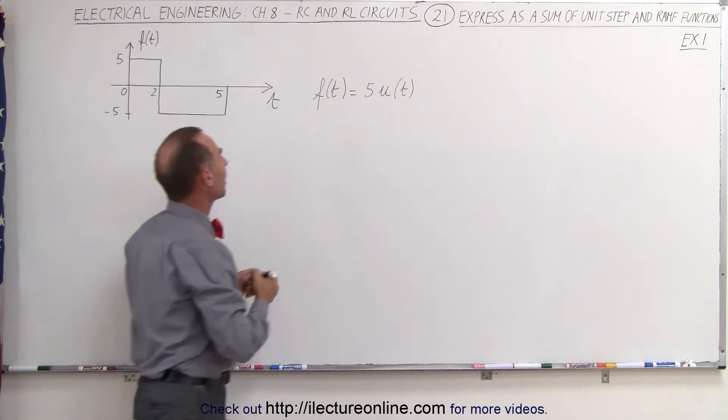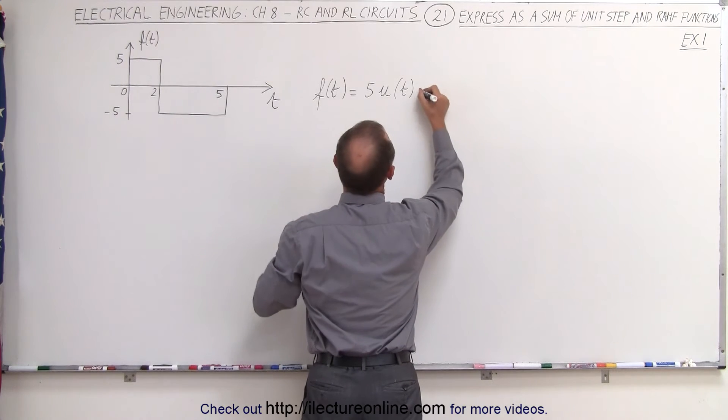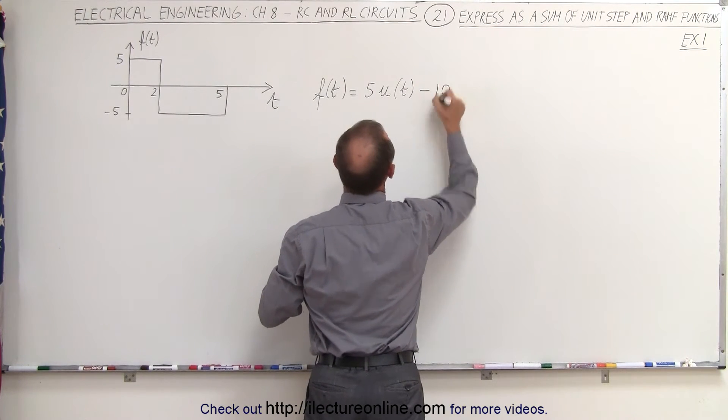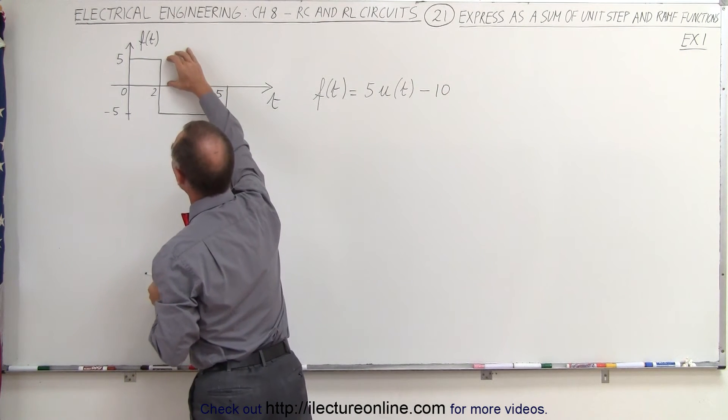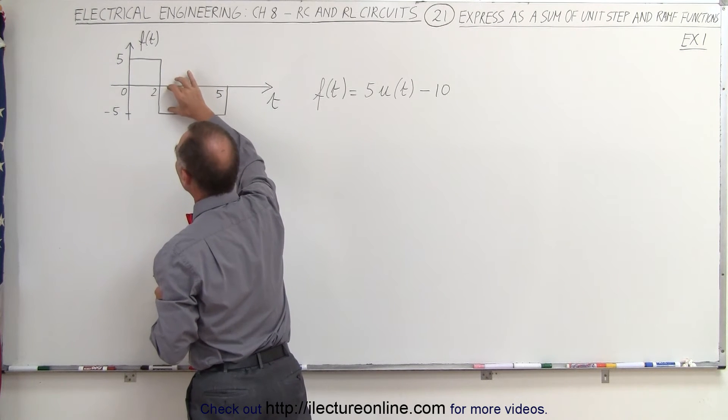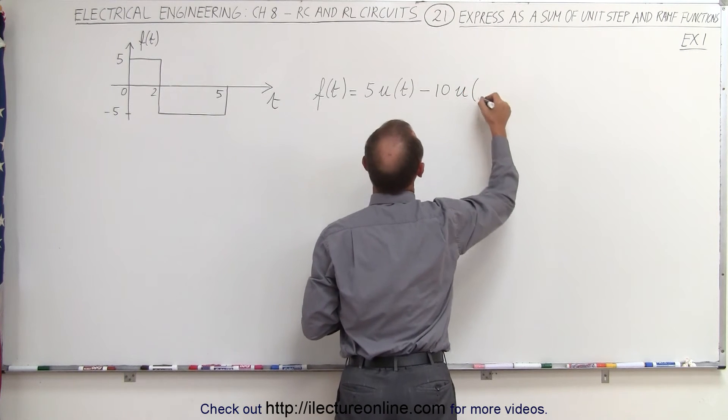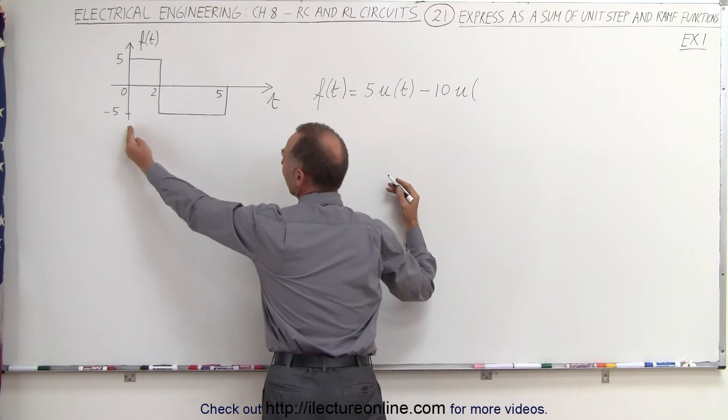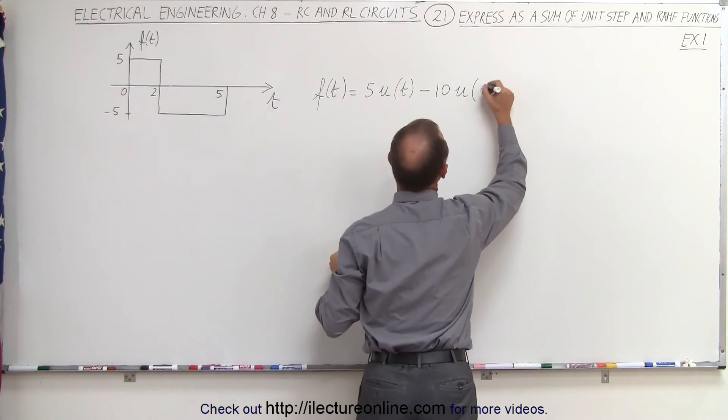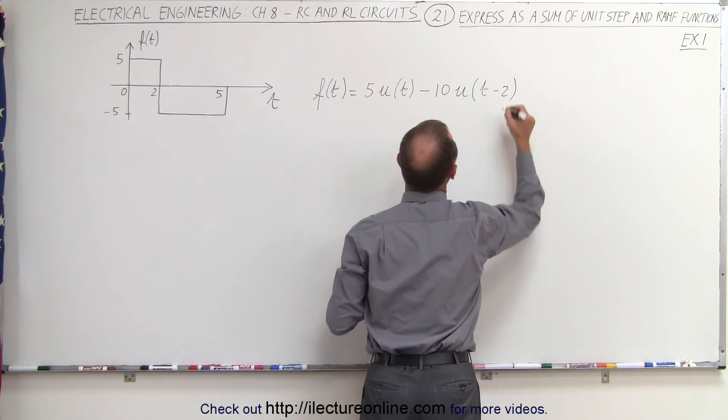That can be accomplished by saying minus 10: minus 5 to get rid of the first 5, and then another minus 5 to get the additional negative 5 amplitude. So we have negative 10 of the unit step function, but now we need to be offset by two seconds. So we have t minus 2 seconds.